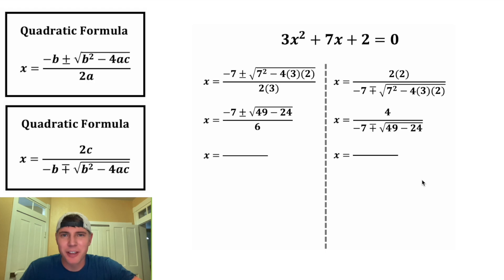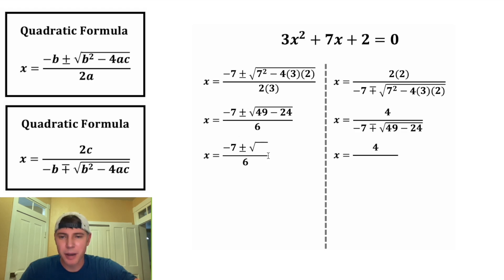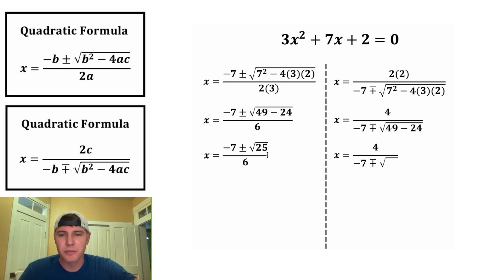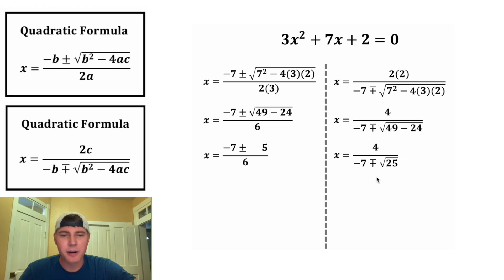And now we can simplify these. On the bottom here we have 6, and on top here we'll have 4. On top, we can copy down the negative 7 plus or minus square root, and on the bottom, we can copy down the negative 7 minus or plus square root. Inside the square root, 49 minus 24 is 25 — same thing on both sides. Square root of 25 is 5.